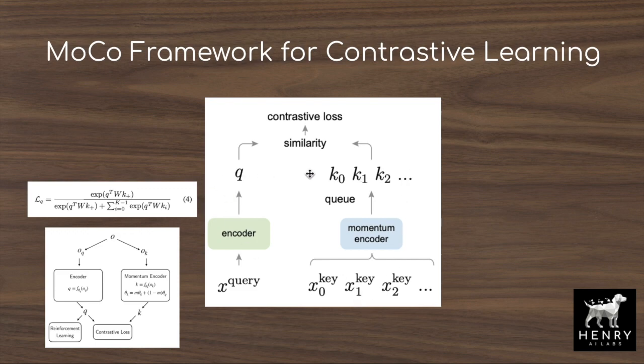The MoCo framework employs a queue — a last-in-first-out data structure where newly sampled batches of data, the most recently sampled stacks of frames from the RL control tasks, are pushed onto the top of the queue, and outdated keys are popped out of the back of the queue.